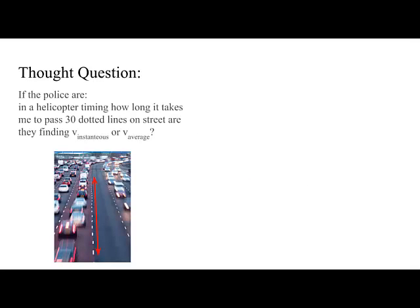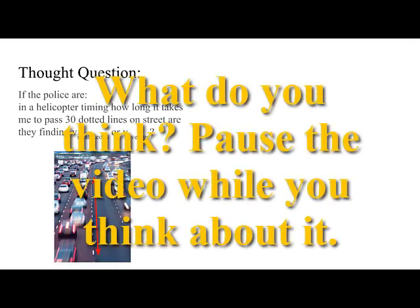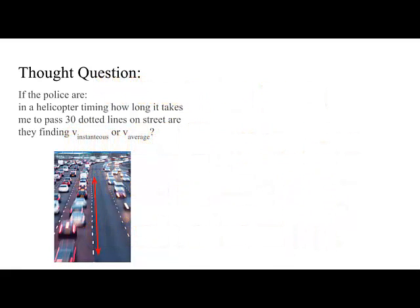So here's a thought question. Mr. Fay is in his Ferrari, and if the police are in a helicopter, timing how long it takes me to go from 1 all the way through 30 of the little dots that are in the middle of the road, if they're timing me how long it takes to do that, what kind of velocity are they looking at? Are they looking at instantaneous velocity or average velocity? If you said average, you'd be right. Basically, the police are looking at me over a long period of time, a long distance. And to be honest, they aren't really looking at how much I speed up or slow down in the middle. They're just looking at here he is at one point, here he is at the next.